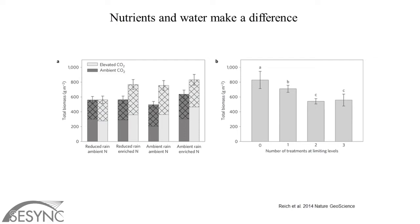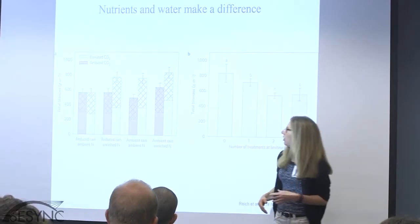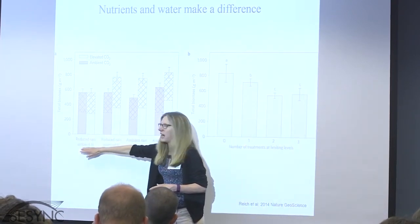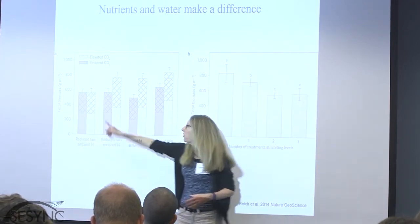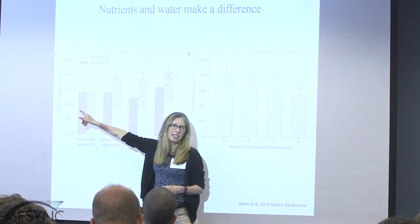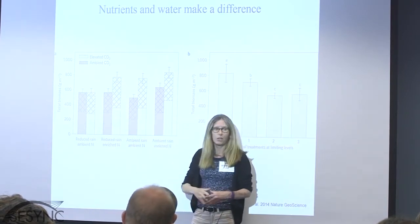Nutrients and water can also make a difference. This is data from a recent paper that Rachel et al. published in Nature Geoscience, where they did a grassland experiment with many replicate plots run for a long time, with elevated and ambient CO2 plots. They had reduced rain and ambient nitrogen, reduced rain and enriched nitrogen, and every combination they could think of. What they found was that when water and nitrogen were at their low levels, there was no effect of elevated CO2. They only began to see an effect when one of the other resources was increased in availability.